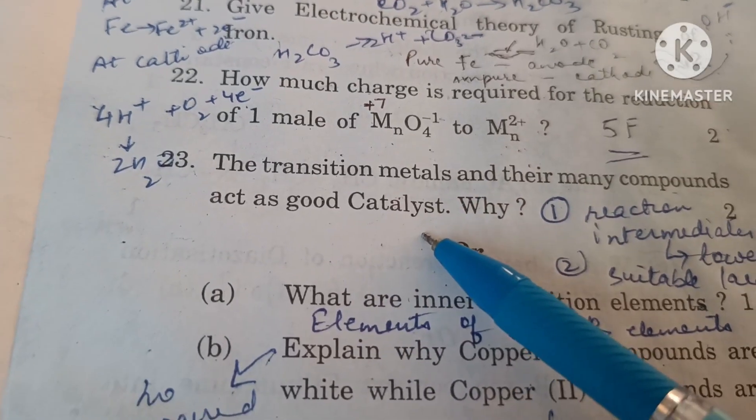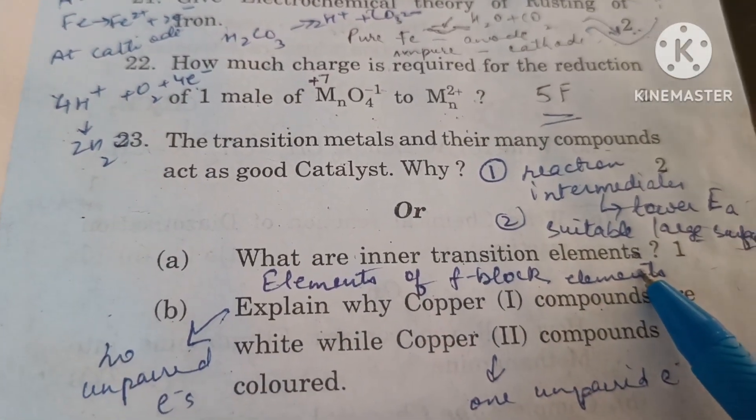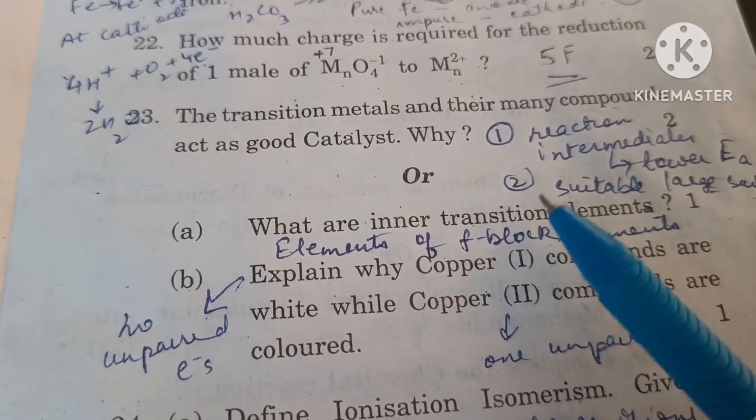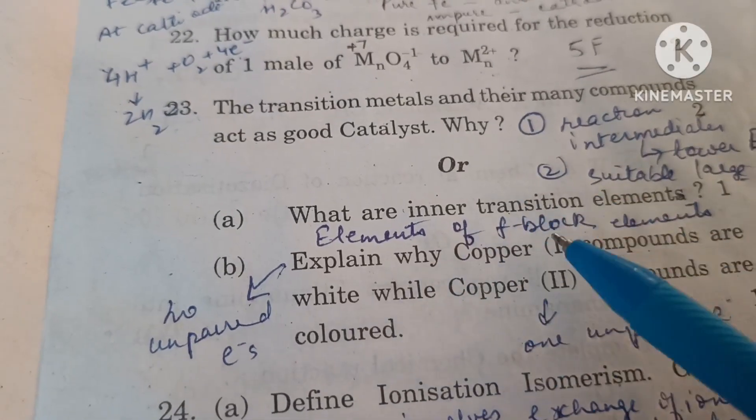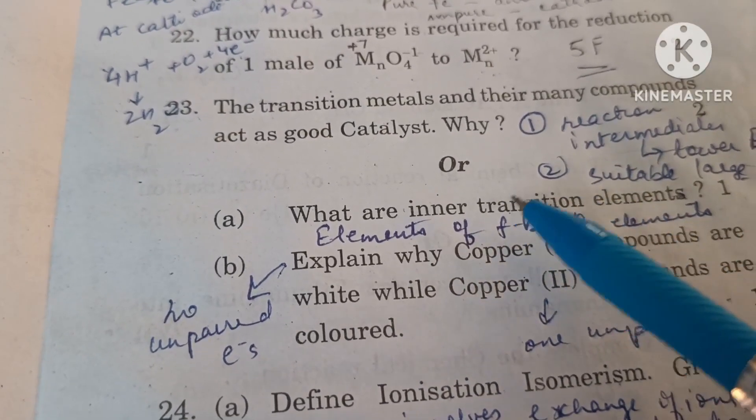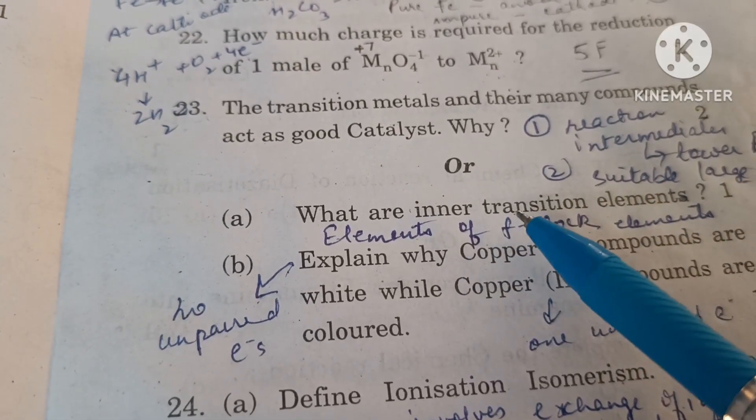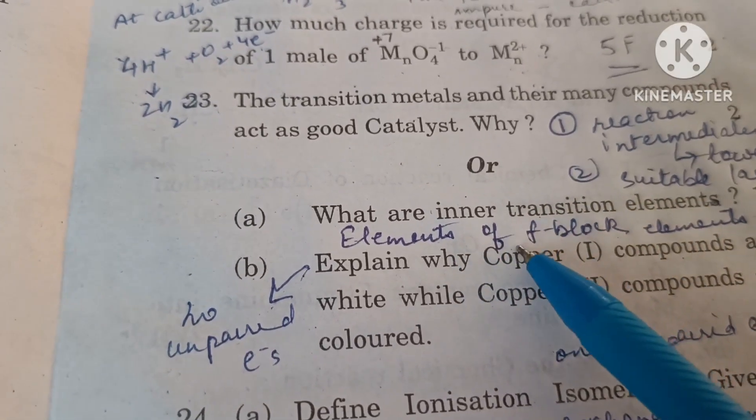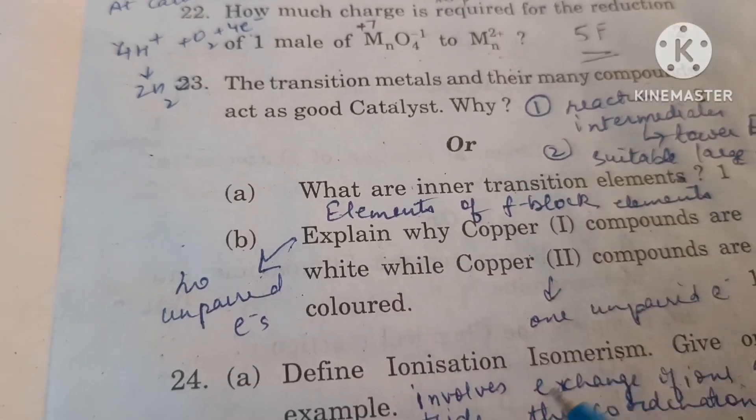What are inner transition elements? Elements of f-block are called inner transition elements because in these elements electron enters inner to the penultimate shell or the d-block elements. The electron is entering a shell inner to the d-block elements, that is inner to the penultimate shell, so they are called inner transition elements.